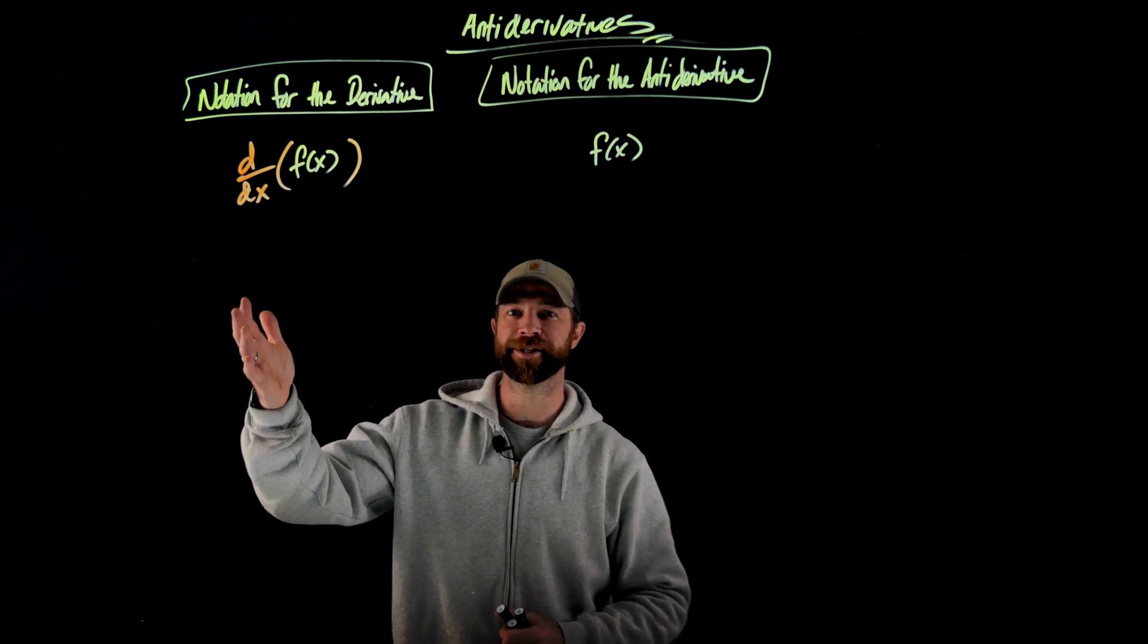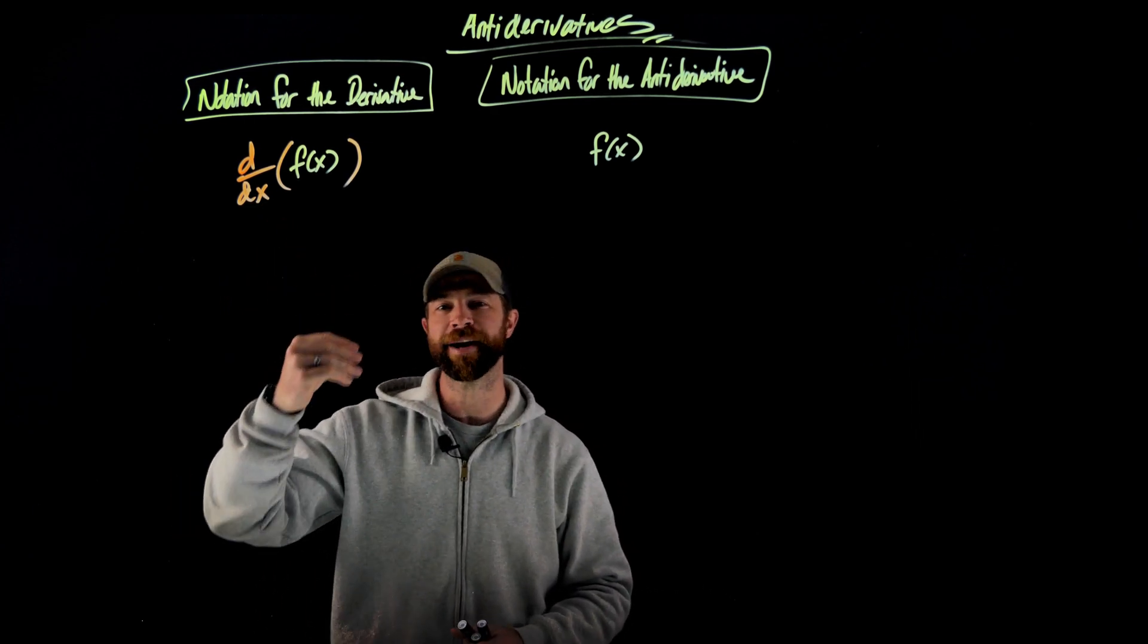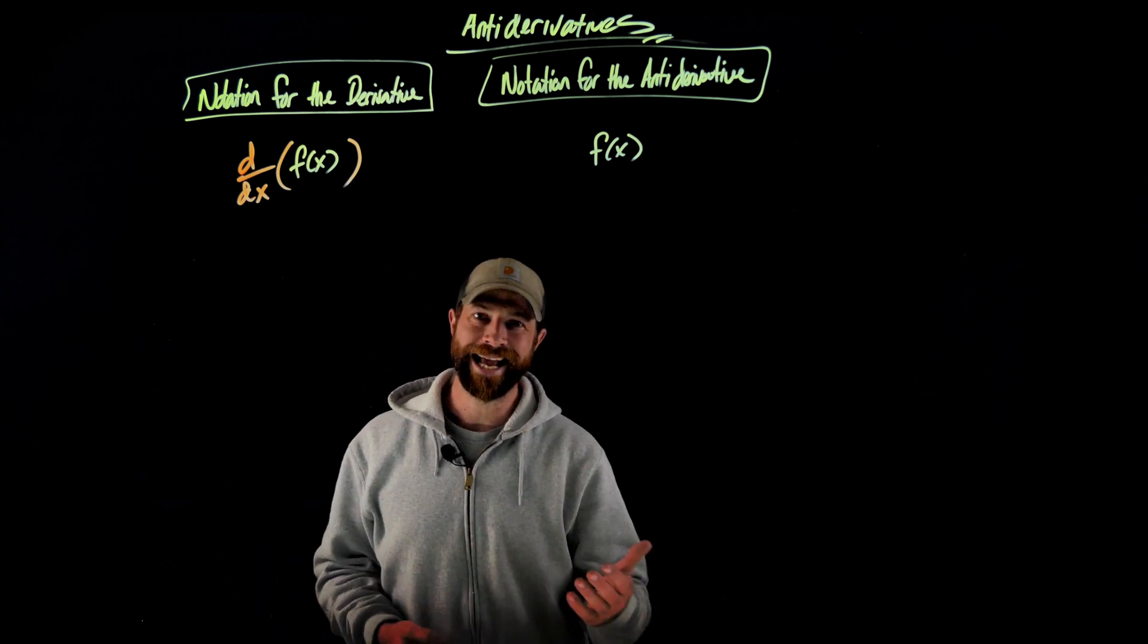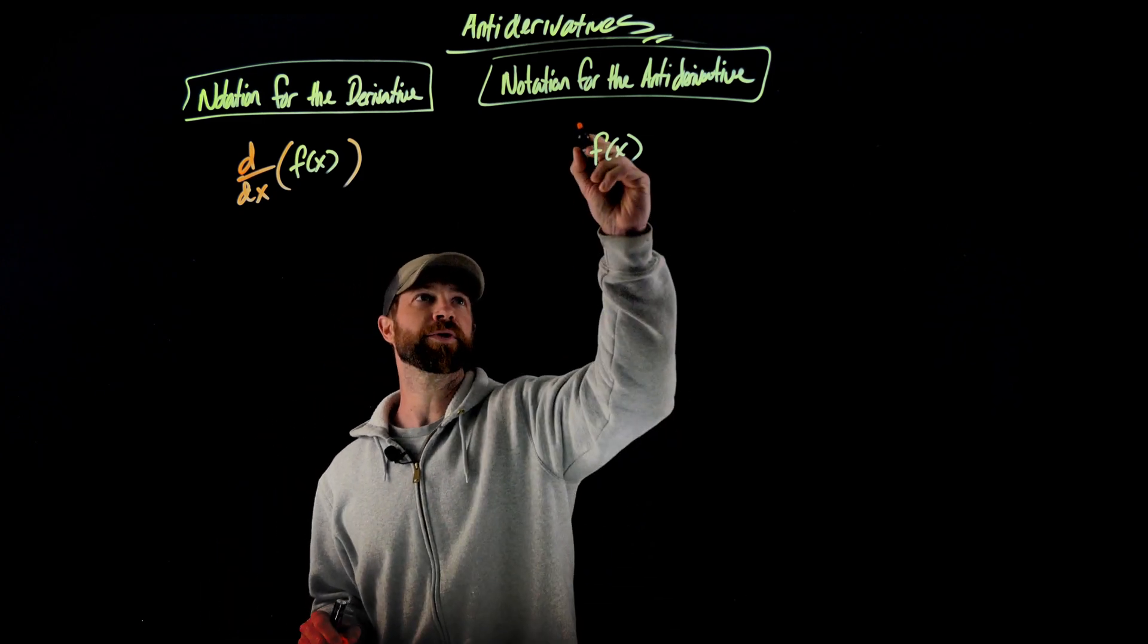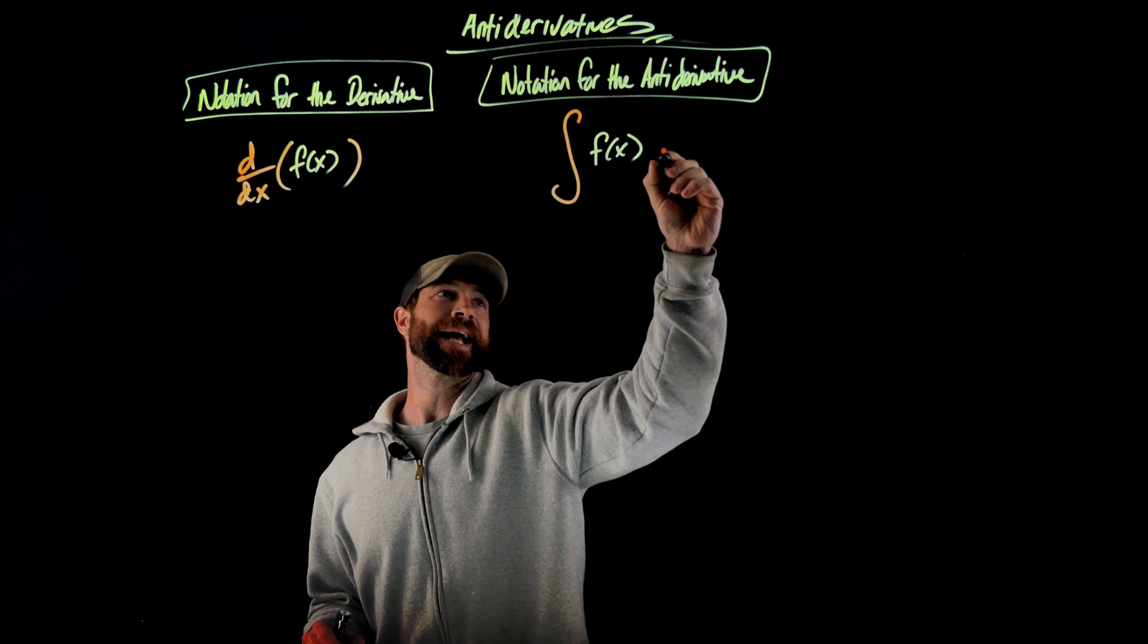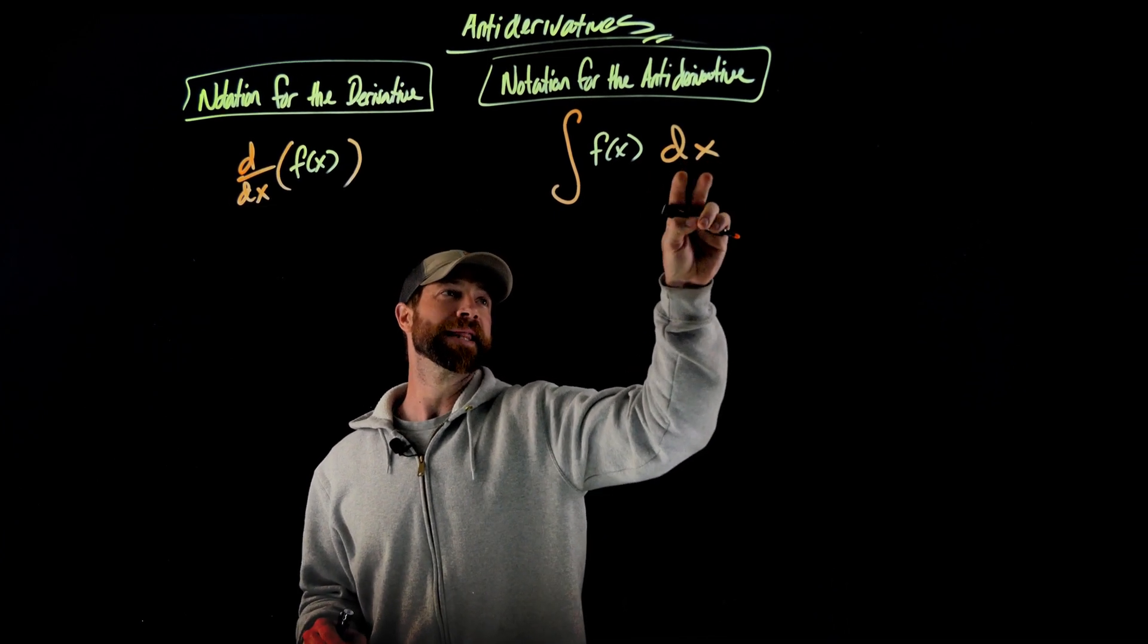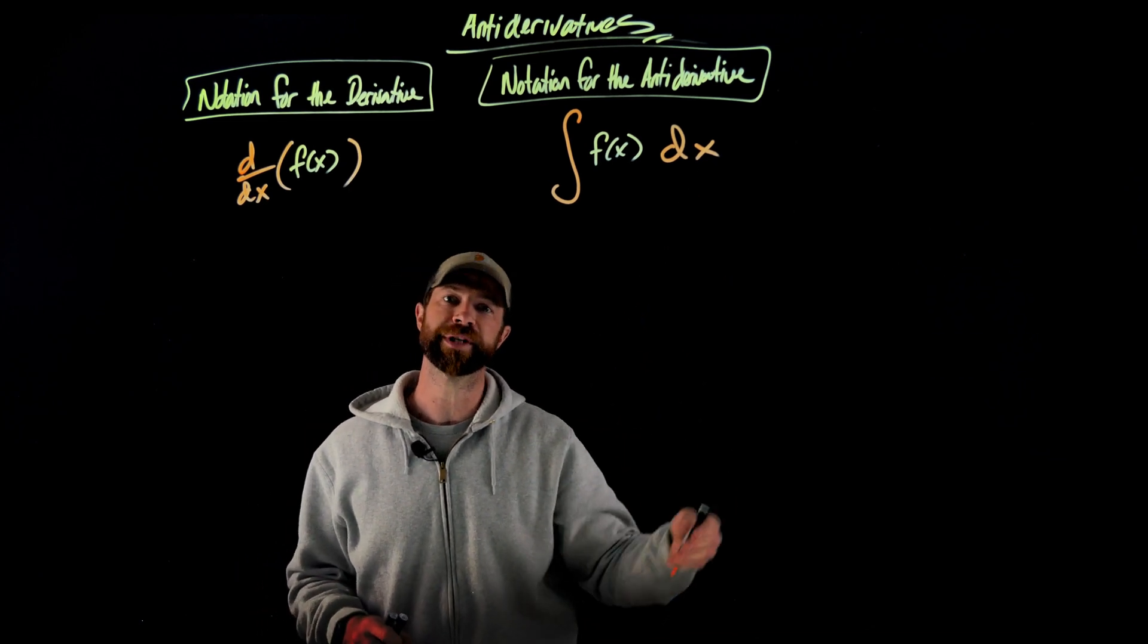First of all, we understand this Leibniz notation for the derivative, right? The important part here is we're denoting the variable with which we're taking the derivative with respect to. So for the antiderivative, we'll denote it in a kind of similar way. We'll use this sign right here to denote the antiderivative. Actually, we're going to call this the indefinite integral. And this piece right here is telling you the variable with which you're integrating with respect to.